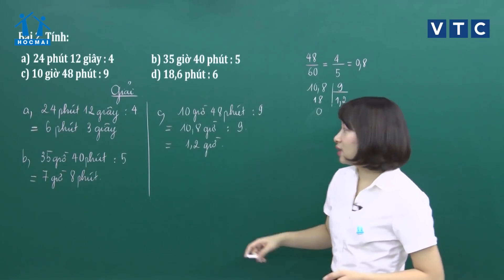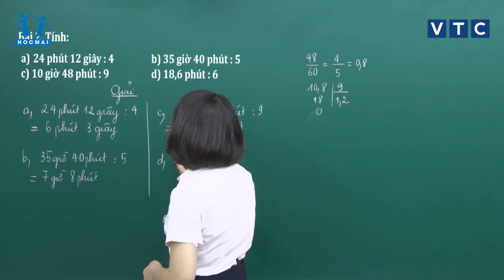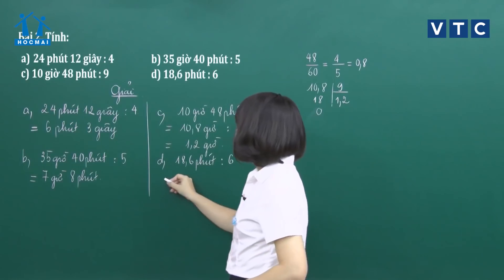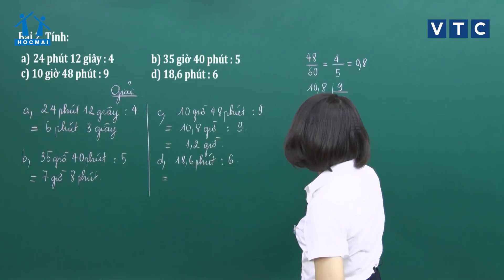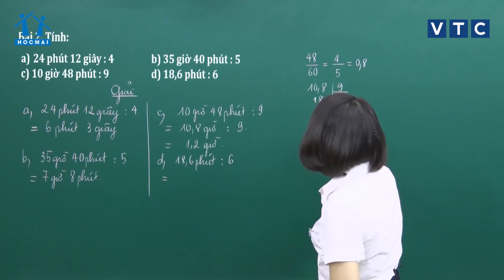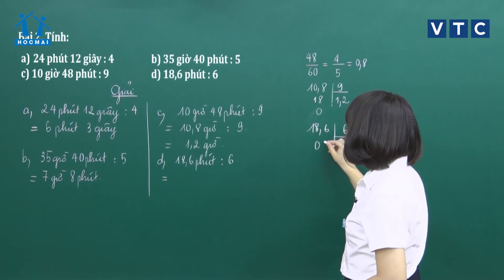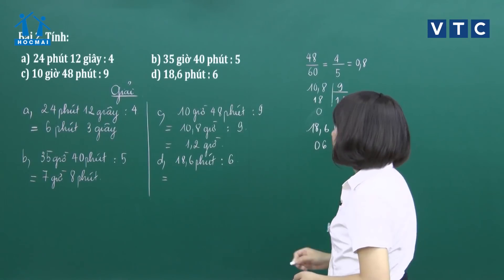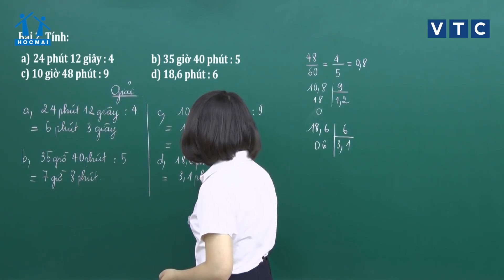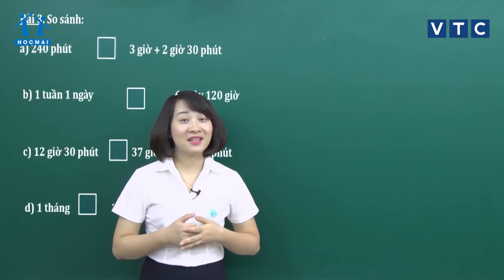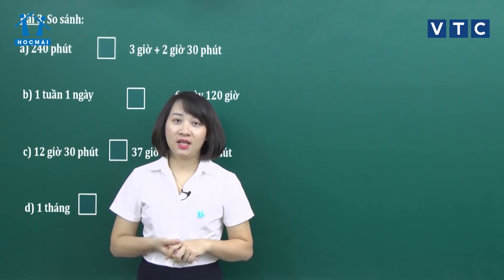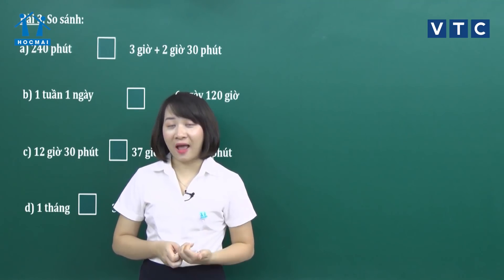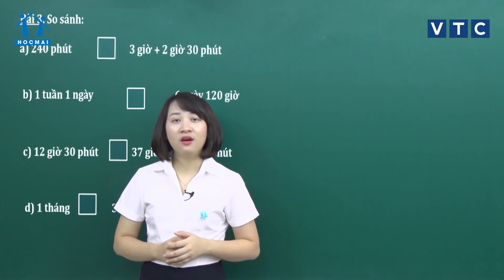Bài tập số 3 là bài so sánh. Để so sánh được những số đo thời gian, điều quan trọng là chúng ta phải đổi chúng về cùng một đơn vị đo — cùng giờ, cùng phút, cùng giây, hoặc cùng ngày, cùng tháng — thì mới có thể so sánh được đơn vị nào lớn hơn, đơn vị nào nhỏ hơn.